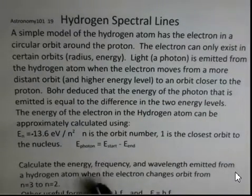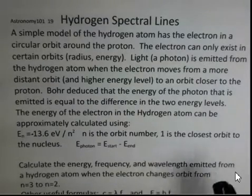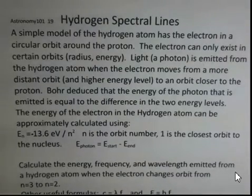So n is the orbit number. Orbit one is the closest to the nucleus. Orbit two is a little bit farther out. Orbit three is farther out. And they have different energies.